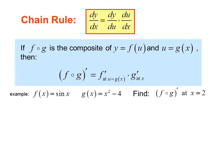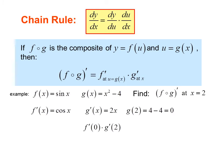Here's our first example. We're going to look at several different treatments of the chain rule to see which works best. If f(x) equals sin x and g(x) equals x squared minus 4, find (f∘g)′ at x equals 2. f′(x) equals cos x, g′(x) equals 2x, and g(2) equals 4 minus 4, or 0. So we take f′(0) times g′(2), which is cosine 0 times 2 times 2, or 1 times 4, or 4.